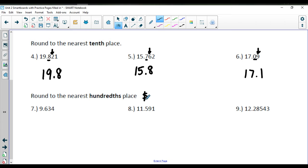Rounding to the nearest hundredth. This one's going to look like money. So we have 9.63. That 4 is going to let this stay at 9.63. 11.59. That 1 will keep it at just 5.9. And 12.28. That 5 is actually going to make that 8 go up to a 9. So we have 12.29 here.